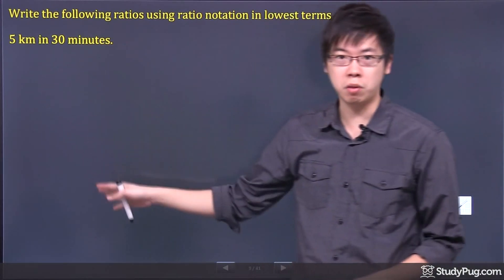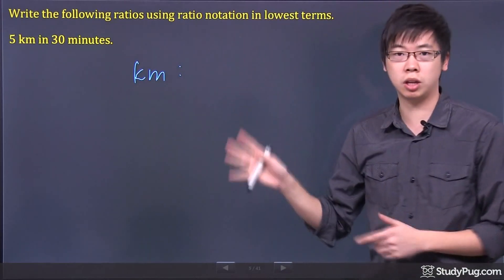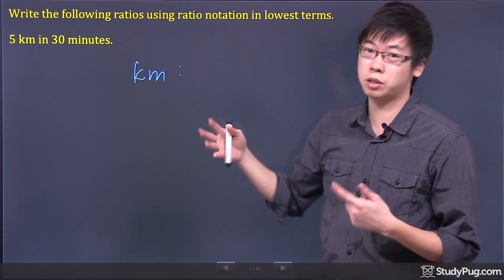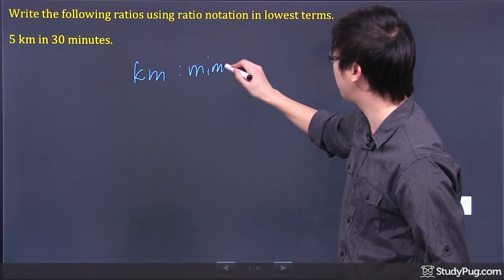We've got five kilometers in 30 minutes. So what we do is, let's have kilometers on this side, and the ratio notation is basically like two dots, like a semicolon. And it's for every minutes here.